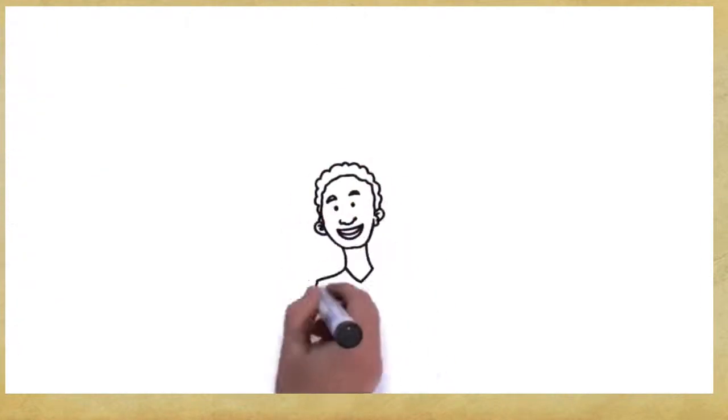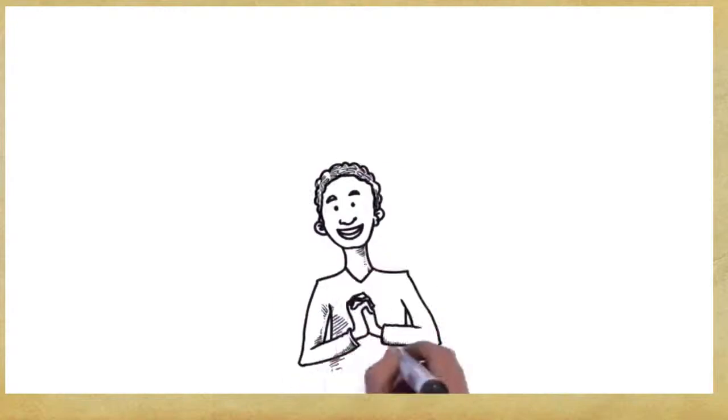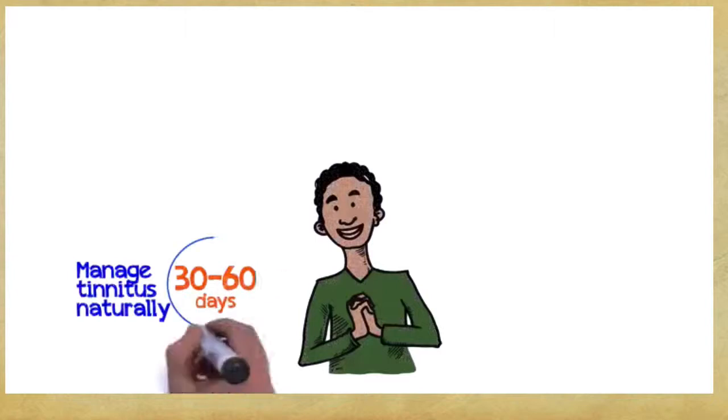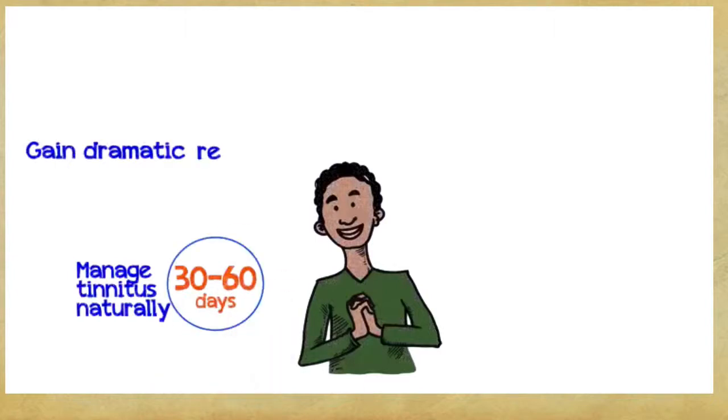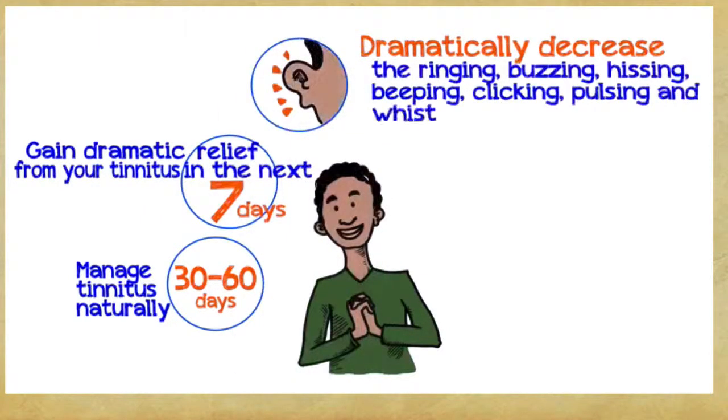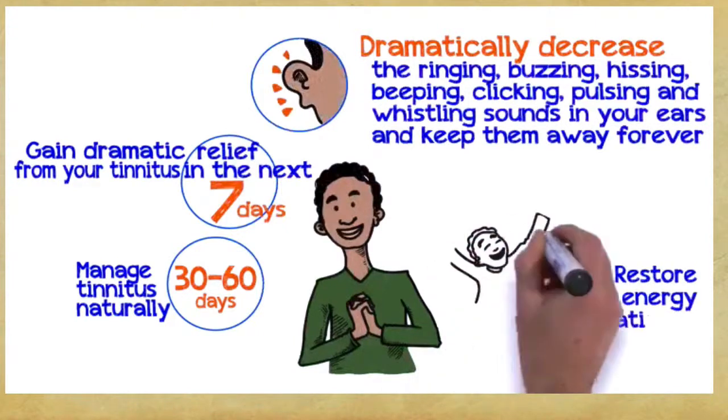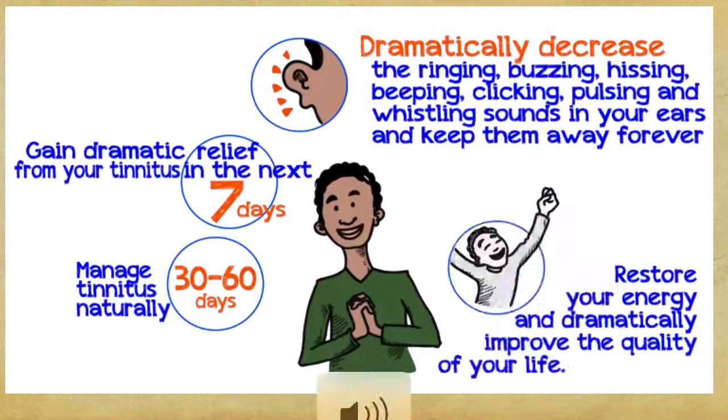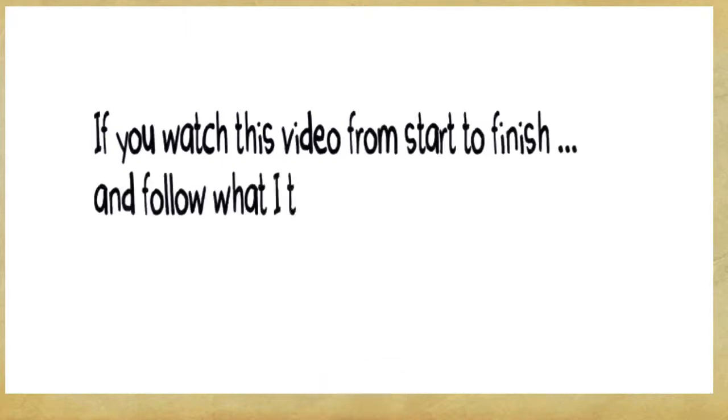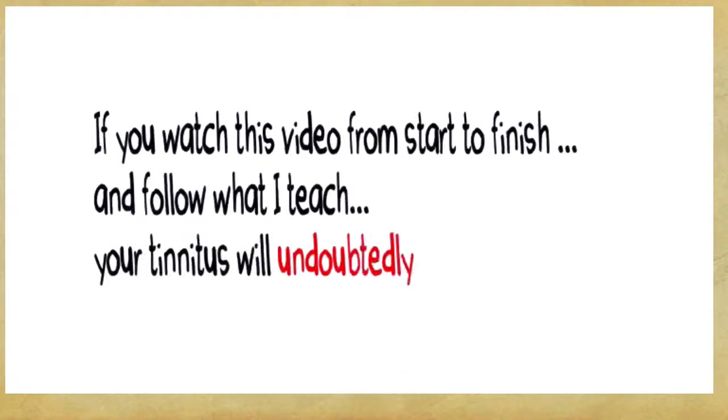So, what can you gain if you embrace these three easy principles? You can manage tinnitus naturally within 30 to 60 days. Gain dramatic relief from your tinnitus within the next seven days. Dramatically decrease the ringing, buzzing, hissing, beeping, clicking, pulsing, and whistling sounds in your ears and keep them away forever. Restore your energy and dramatically improve the quality of your life, guaranteed. Let me reiterate, if you watch this video from start to finish and follow what I teach, your tinnitus will undoubtedly start to fade away.